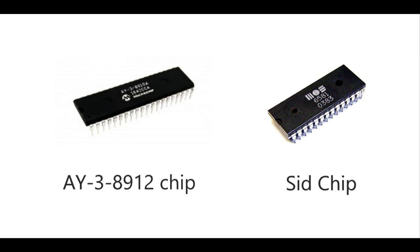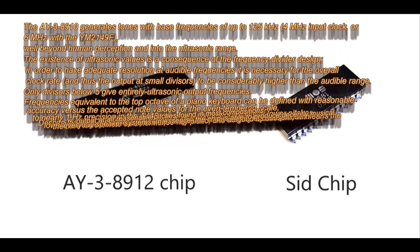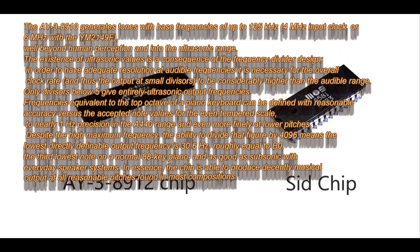You've got to tip your hat to people like Rob Hubbard, Alistair Bramall and all the rest of them who did unbelievable work with these chips. Basically, if you've got a drum pattern and a bass drum going boom boom boom, in between those sounds you had to fit other sounds on the same channel in order to have more than three sounds playing. So if you had a bass line, a melody line, some percussion, and on top of that you had to have game sounds — how they did it is just mind-blowing.